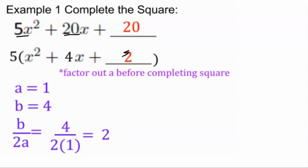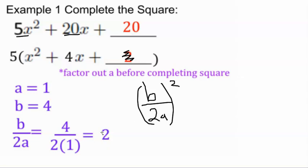There's a correction on this picture — what you actually add is (b/2a)², not just b/2a. So b/2a is 2, and 2 squared is 4. We'd have 4 right here, and 5 times 4 is 20.